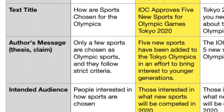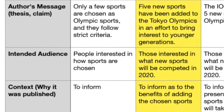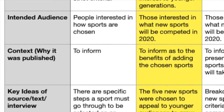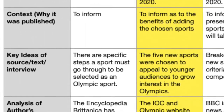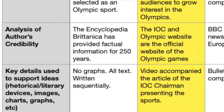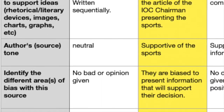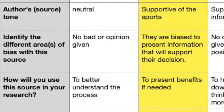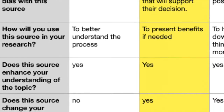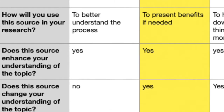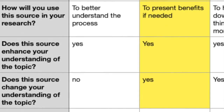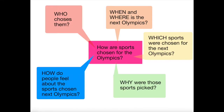And I realized as I did this that the Olympic Committee is biased. This means that they of course believe that the sports they chose were the right ones, because they were the ones that chose them. Which led me to wonder, what do other people think about these five new sports? And more importantly, what do I think about them?